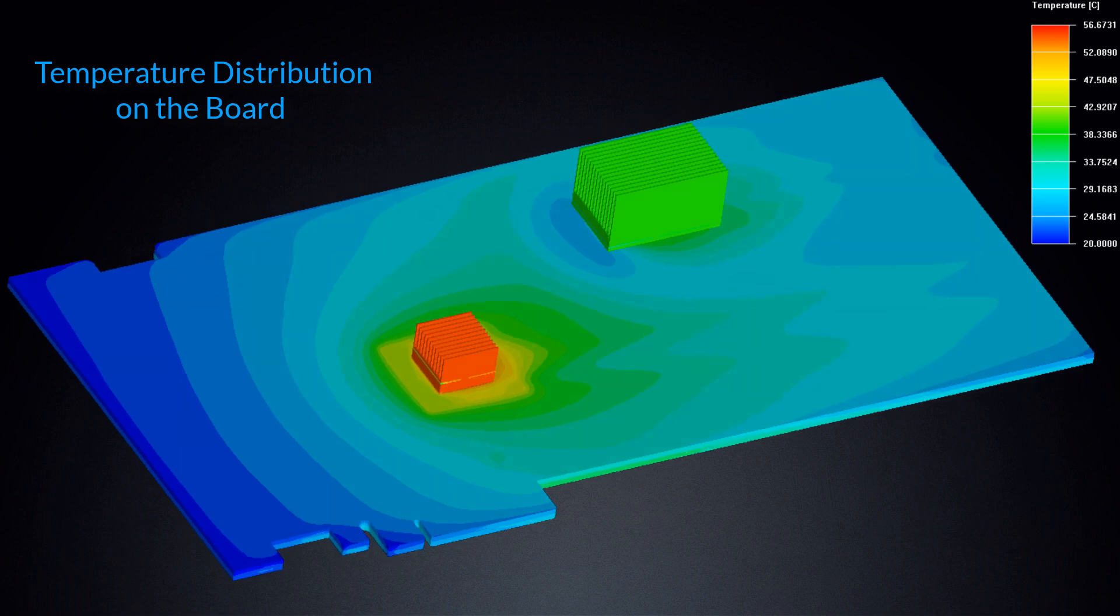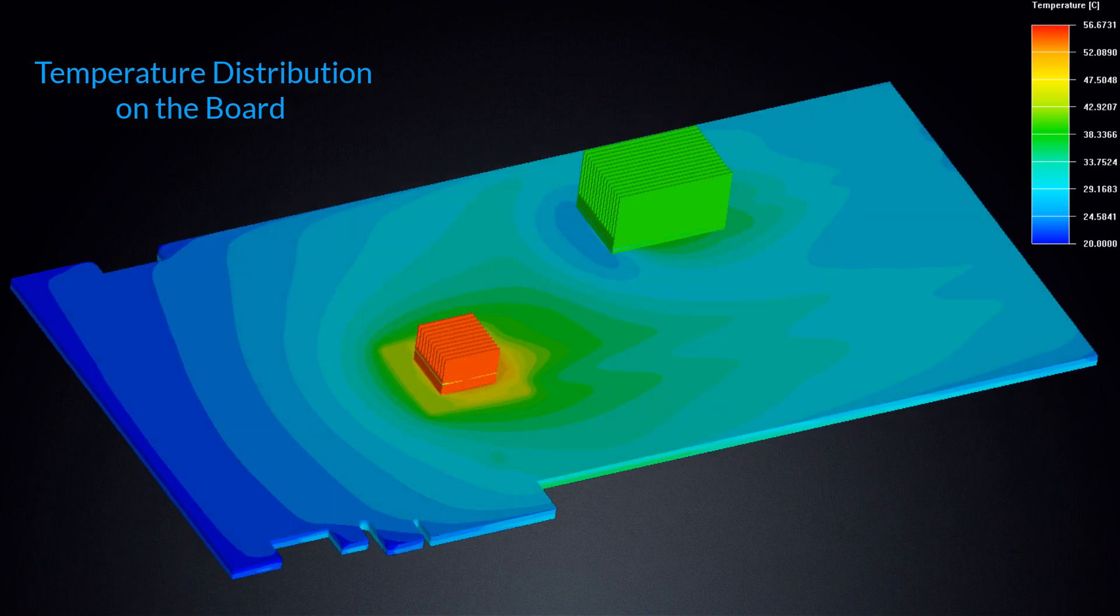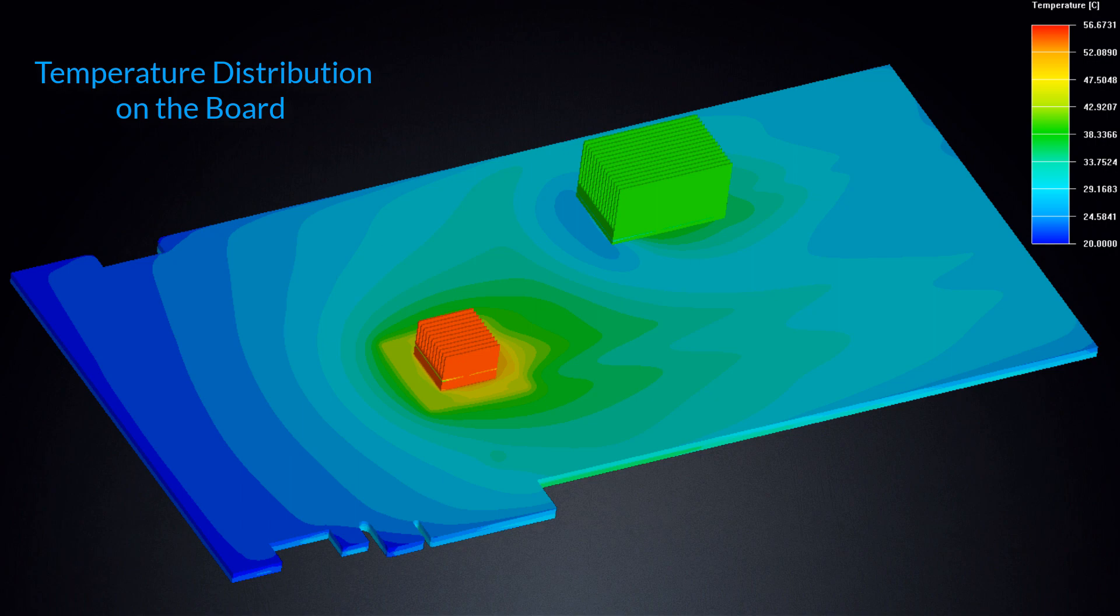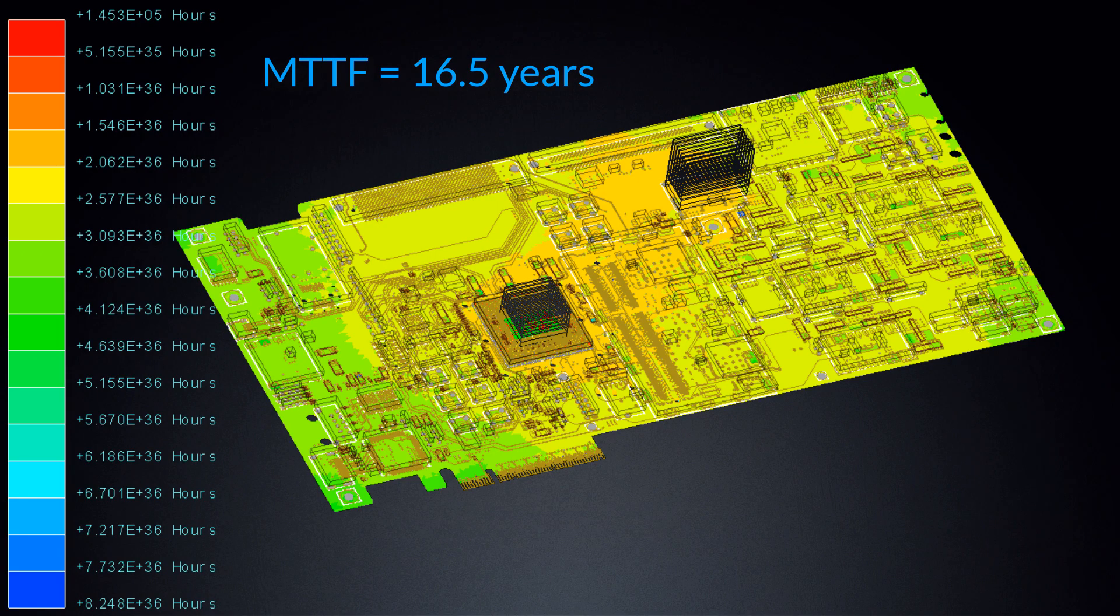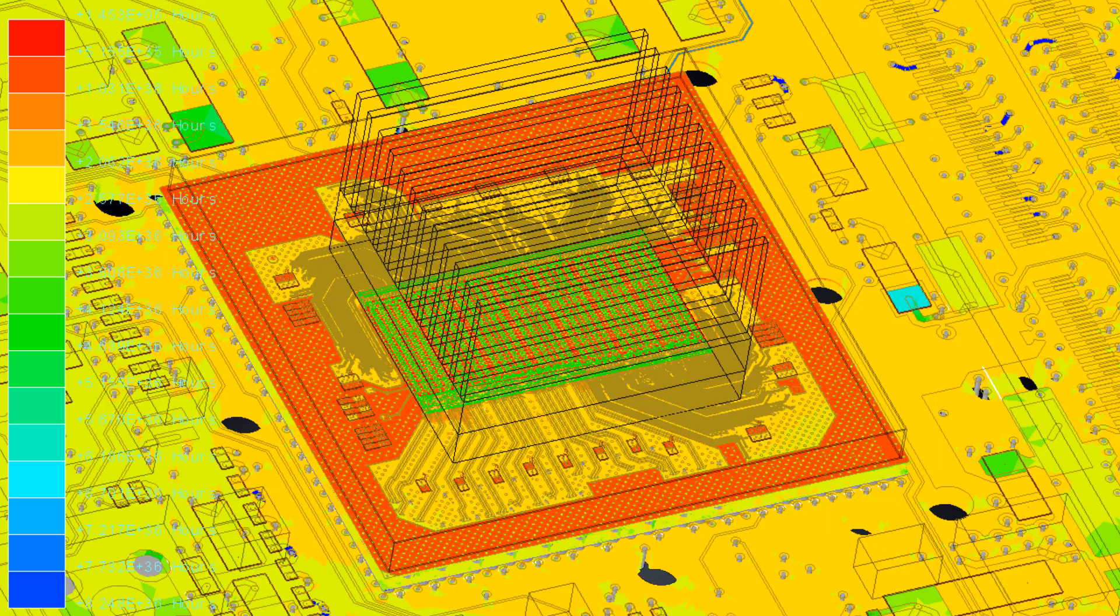Electromigration is a strong function of temperature. You can perform thermal simulation in ANSYS icepack to get an accurate picture of the board's temperature distribution. Graphical feedback helps to visually identify areas where electromigration effects may lead to damage over time.